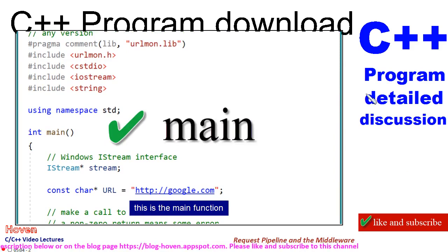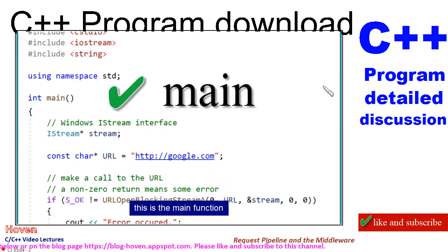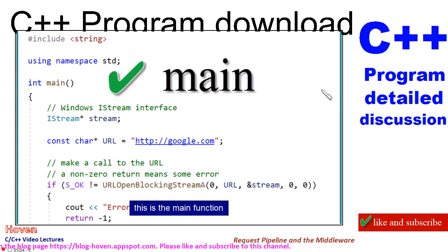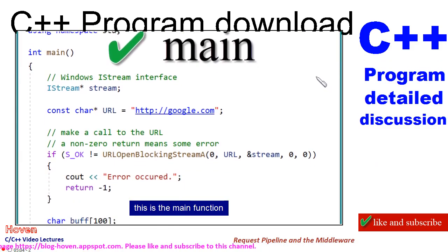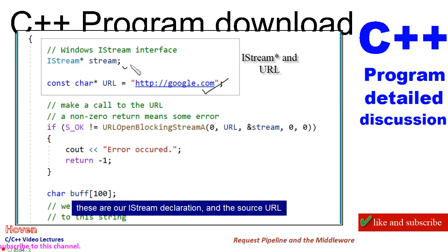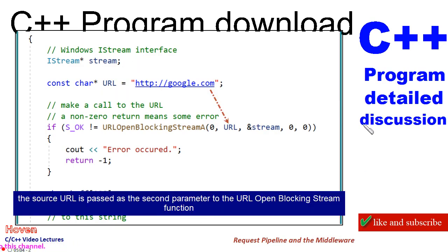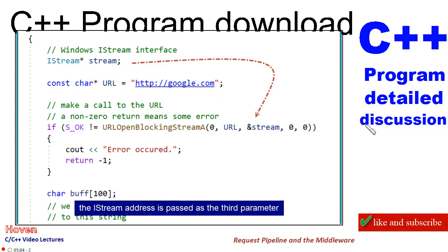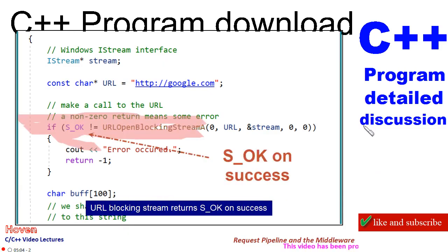This is the main function. These are our IStream declaration and the source URL. The source URL is passed as the second parameter to the URLOpenBlockingStream function, and the IStream address is passed as the third parameter.